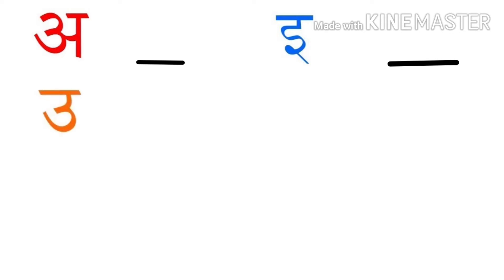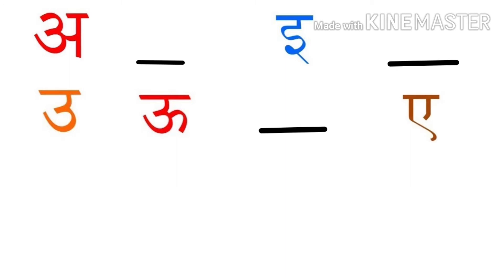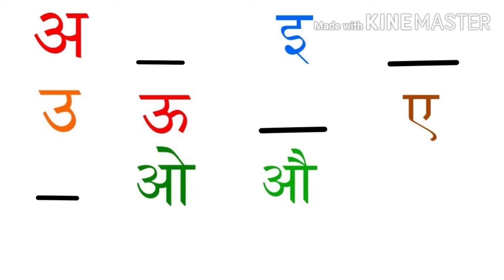उ के बाद ऊ। उ के बाद खाली स्थान। खाली स्थान के बाद ए। ए के बाद खाली स्थान। खाली स्थान के बाद O। और O के बाद O।